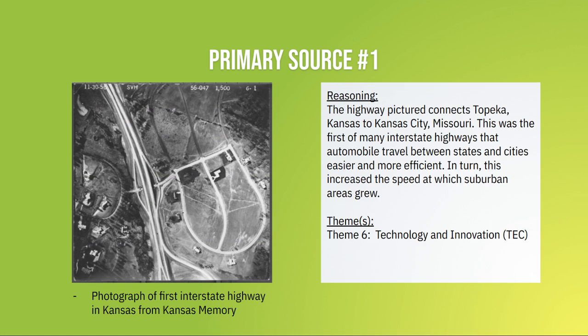Our first primary source is a photograph of the first interstate highway in Kansas. It connects Topeka, Kansas to Kansas City, Missouri. This was the first of many interstate highways that made automobile travel between states and cities easier and more efficient. In turn, this increased the speed at which suburban areas grew. This falls under Theme 6: Technology and Innovation.